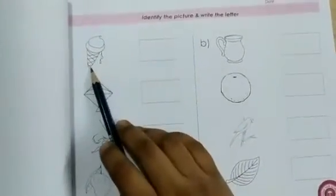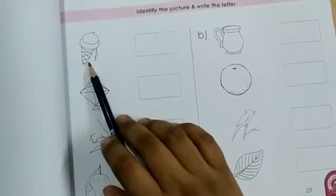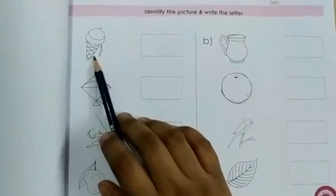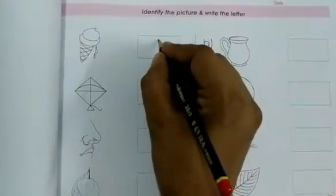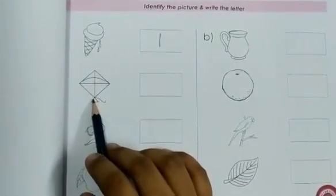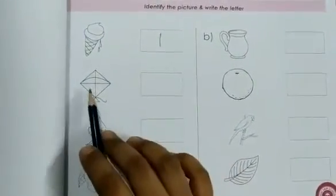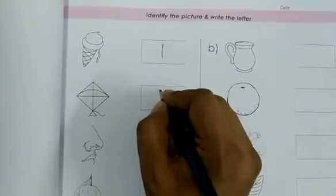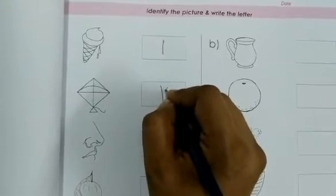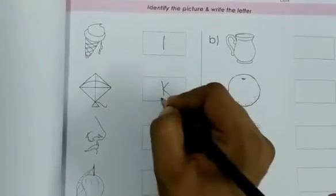What is this? Do you know? This is ice cream. I for ice cream. K. Kite. K for kite. I'll write here K. Okay?